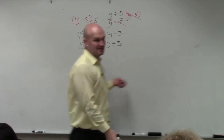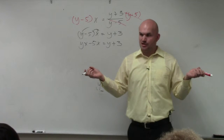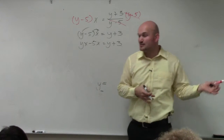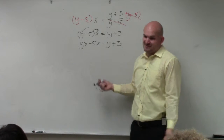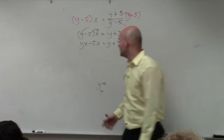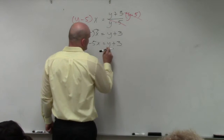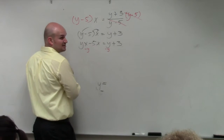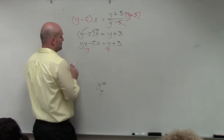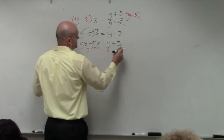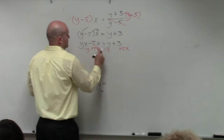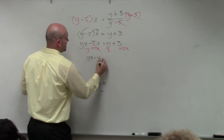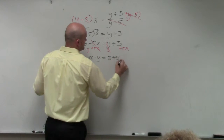I still can't solve for y when I have a y on both sides. So I need to pick a side that I want y to be on — it could be the left side, it could be the right side, it doesn't matter. But since I already put y on the left side, let's solve for y on the left side. So to do that, I'm going to subtract a y on both sides, and I'm also going to add a 5x on both sides to get the 5x to the other side. Therefore, I'm now left with yx minus y equals 3 plus 5x.